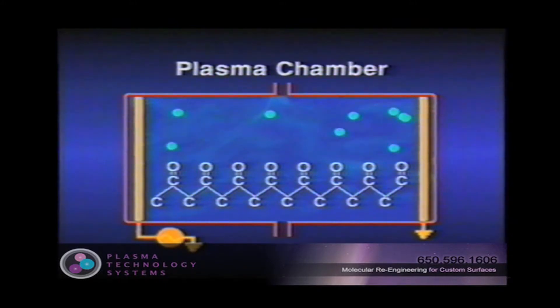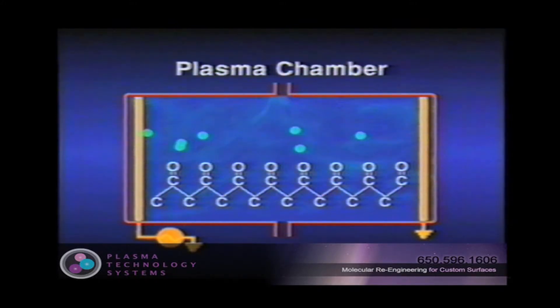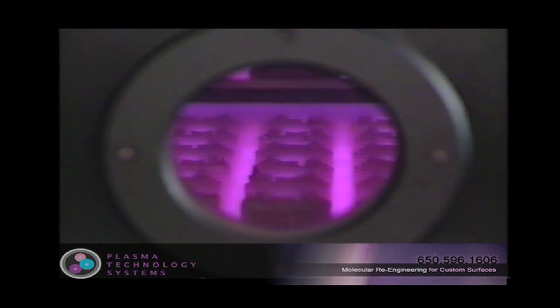Depending on the process gas employed, various functional groups are possible. Hydroxyl and carboxylic acid groups are commonly created in polymers treated in an air plasma. If nitrous oxide or ammonia is employed as the process gas, primary and secondary amines as well as amino functional groups are possible.